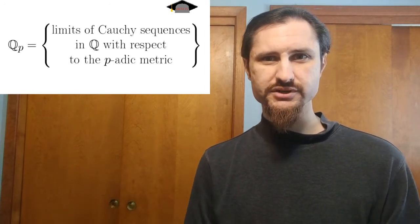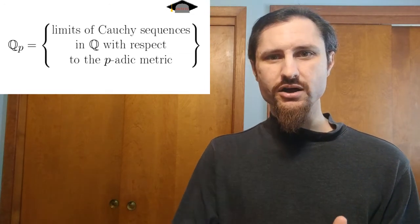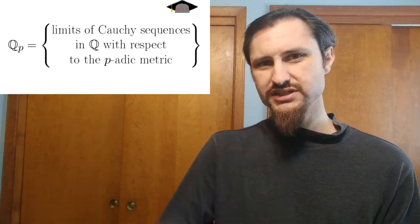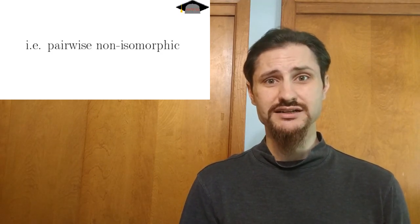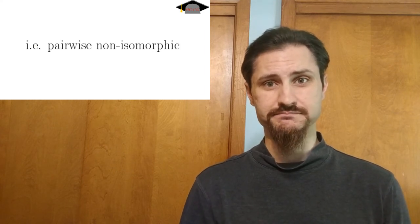So you take the usual rational numbers, add into that set all limits of Cauchy sequences with respect to this p-adic metric. And these p-adic numbers still define a field. So you can add, subtract, multiply, and divide them so long as you don't divide by zero. The distributive property still holds and everything else that comes along with being a field. Furthermore, these p-adic fields are different for every different choice of the prime number P.